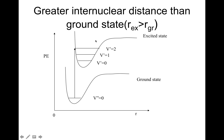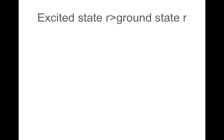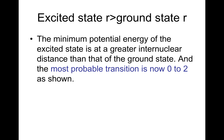If we shift the excited state a little bit to the right, the transition will occur to a higher vibrational level. In Case B, the excited state r is greater than the ground state r — the minimum potential energy of the excited state is at a greater internuclear distance than that of the ground state. The bond has stretched, and the most probable transition is now v=0 to v=2, as shown in the diagram.